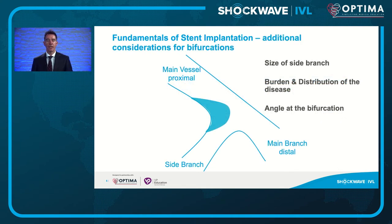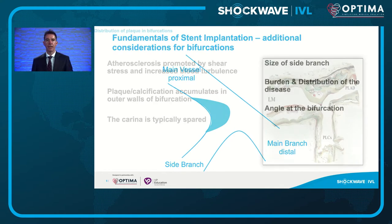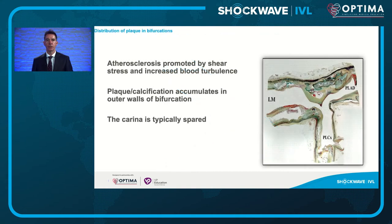When managing a bifurcation lesion, there are additional considerations: the size of the side branch, the relevance of the side branch, the burden and distribution of disease, and the angle at that bifurcation - all come into play and will affect your decision making as you proceed.